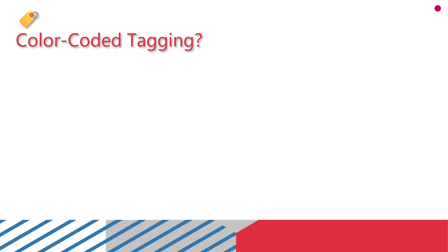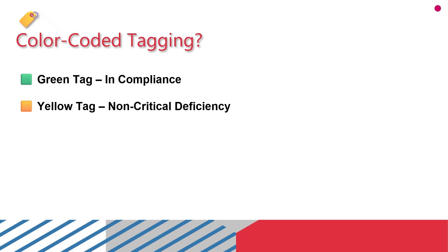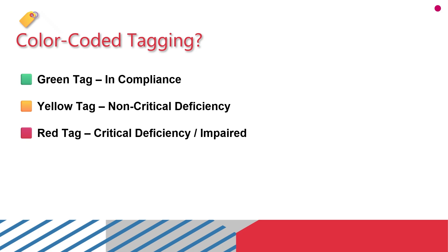Color-coded tagging — there are various tags used as per NFPA 25. Green tag means the system is in proper working order and in compliance with NFPA 25 — no critical deficiencies or impairments. Yellow tag means a non-critical deficiency — minor issues found, system still functions properly but needs correction, no immediate danger. Red tag indicates a critical deficiency or impairment — a major problem or full impairment, the system is not functioning or is unsafe, and immediate action is required. Tags must include the date, inspector name, type of issue, and signature.